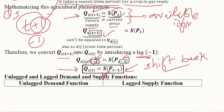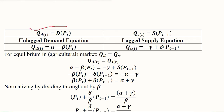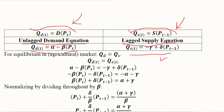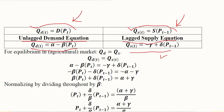We now differentiate the demand and supply functions. The demand function is unlagged because there was no lag in it, whereas the supply function has a certain lag. The unlagged demand equation and the lagged supply equation are expressed in their functional and equation forms respectively.